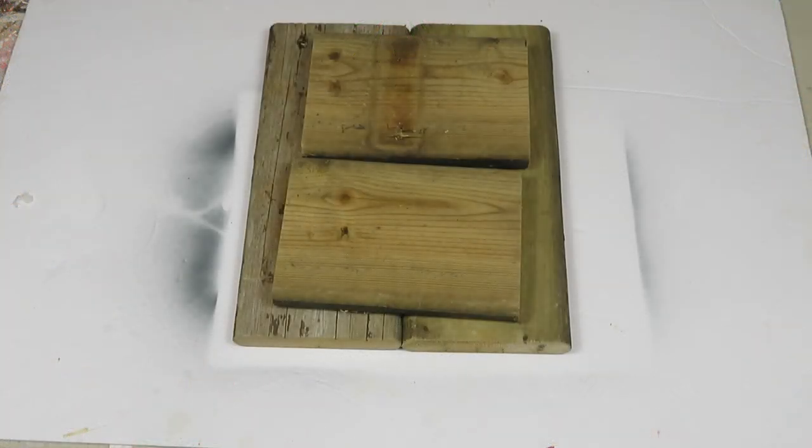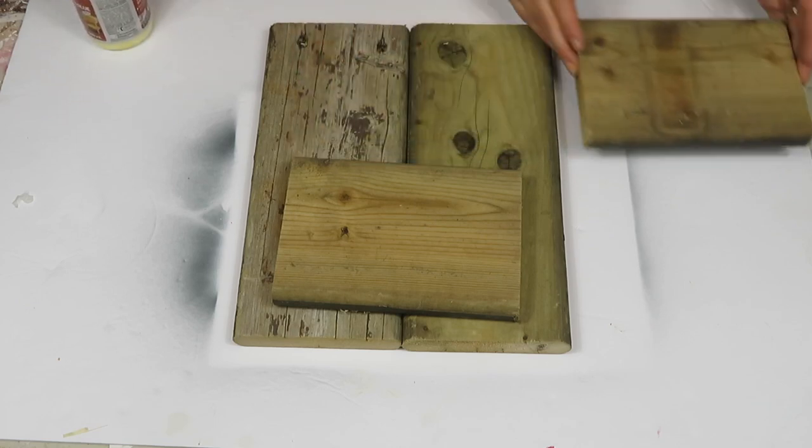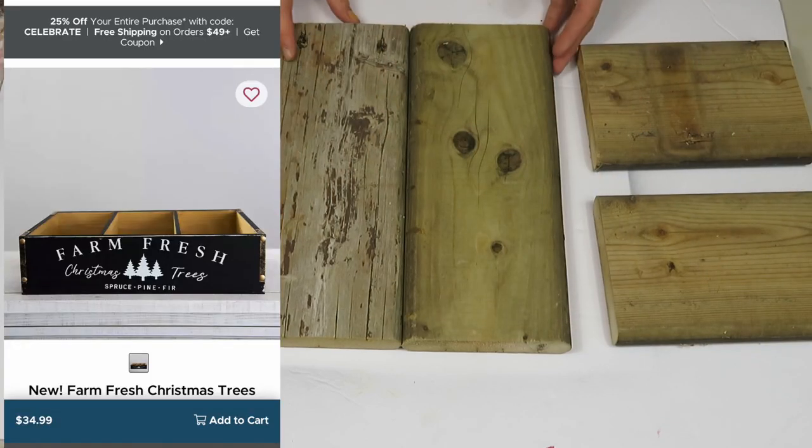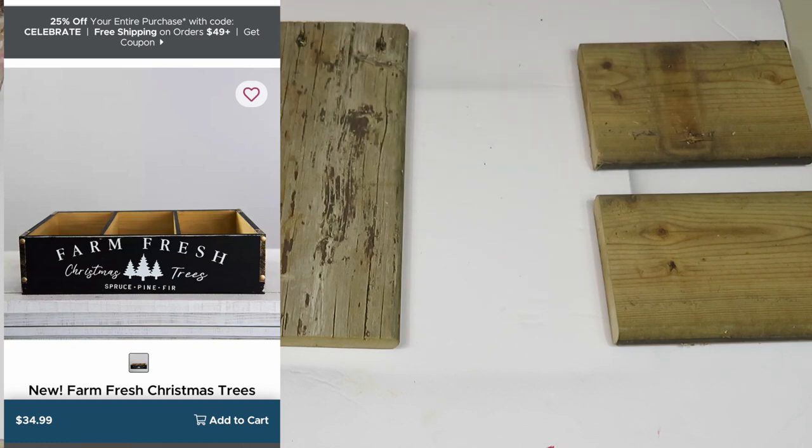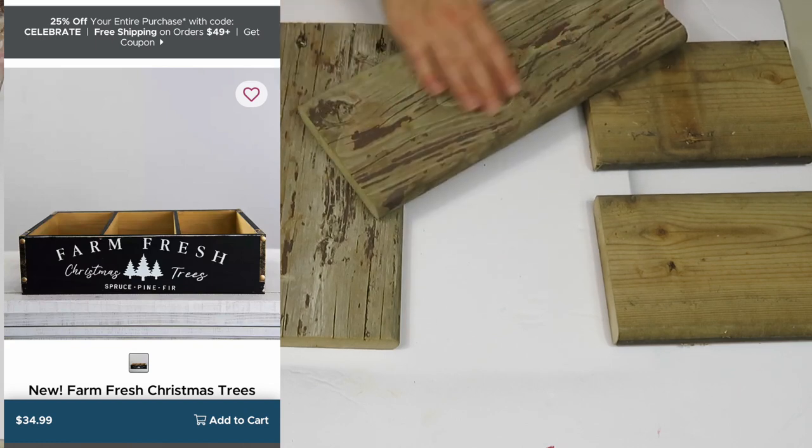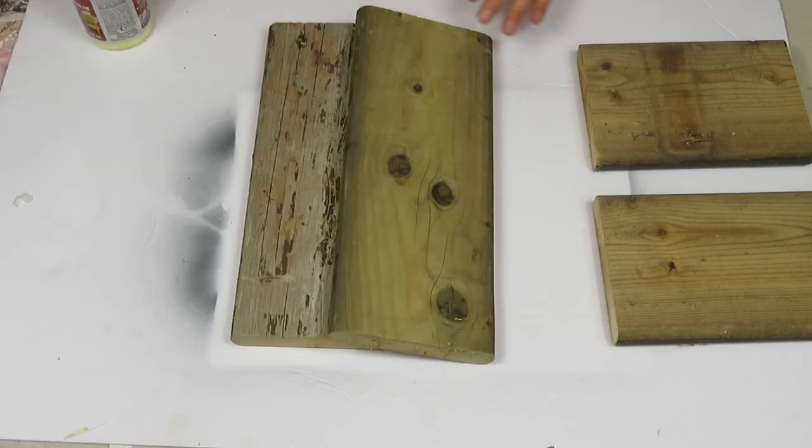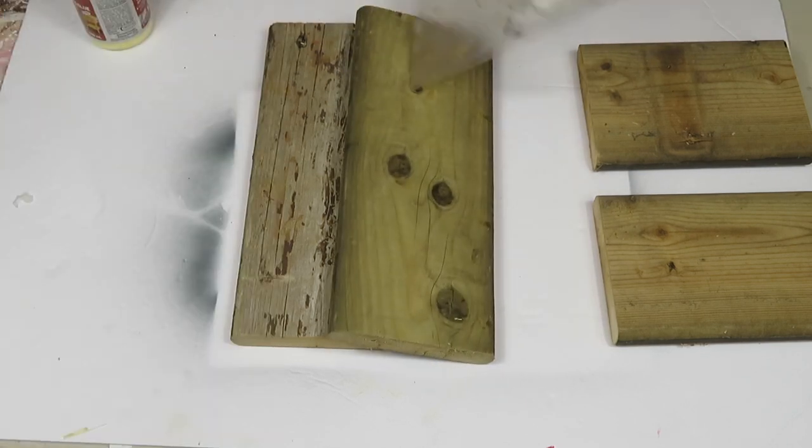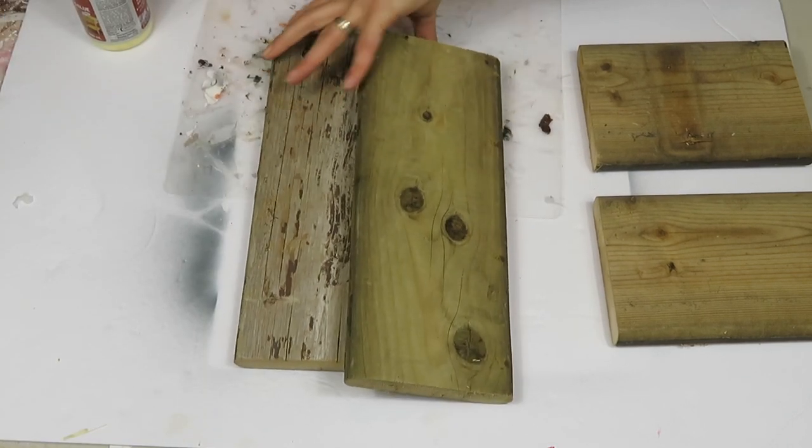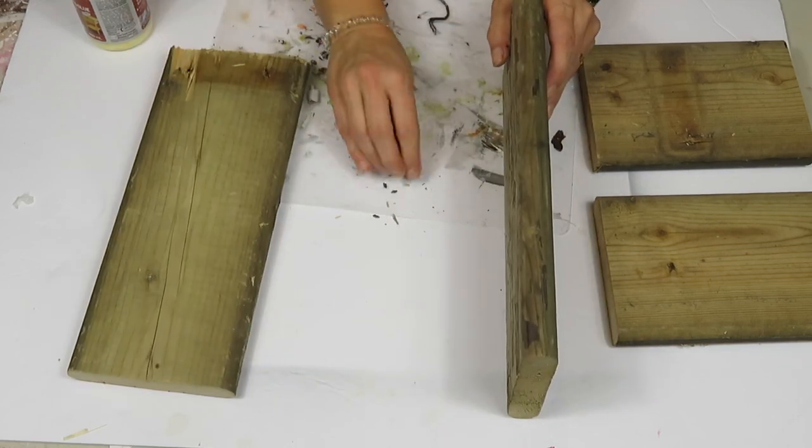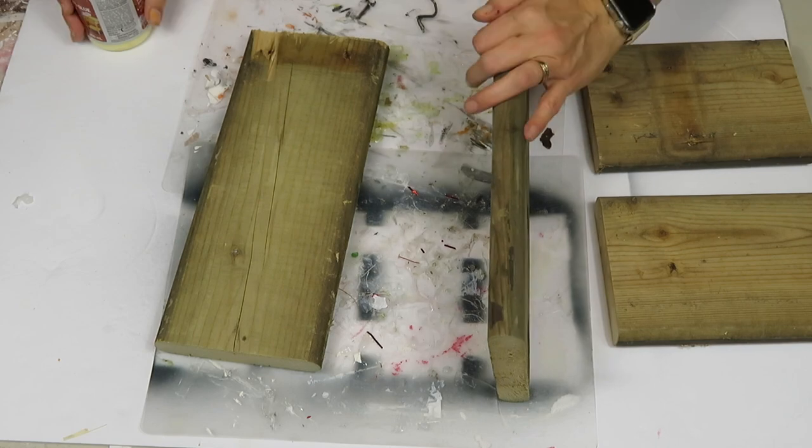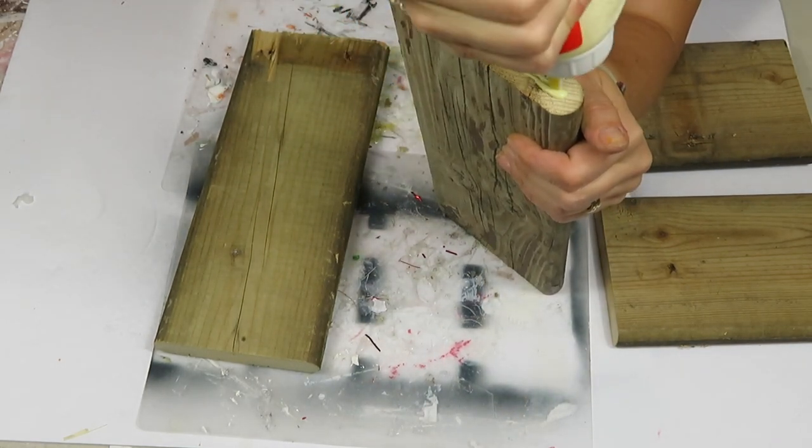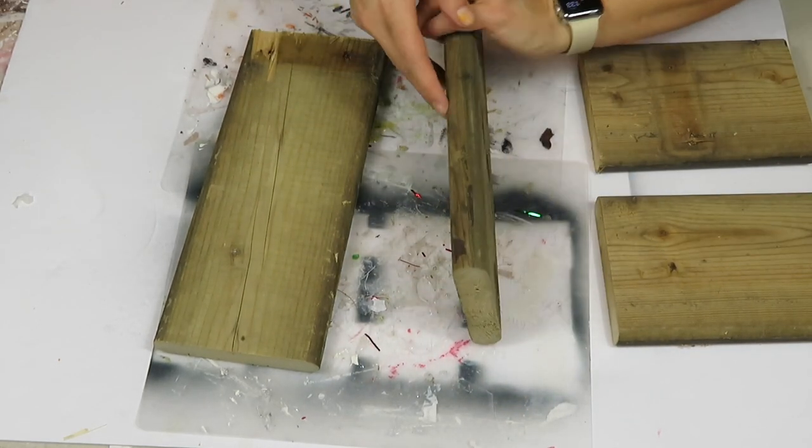For the first dupe, I will be creating a crate and this inspiration did come from Kirklands and it was $34.99. I got my wood for free - I've had it on hand - and then the paint I had on hand and I just used a Cricut machine to cut out some vinyl which I had on hand. So my project was much cheaper.